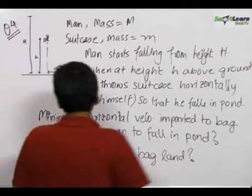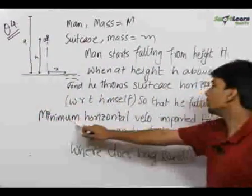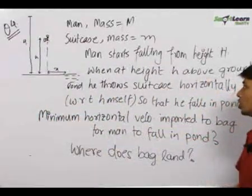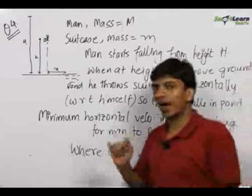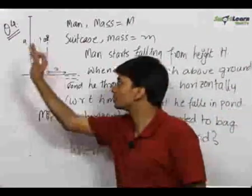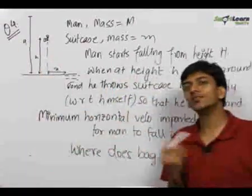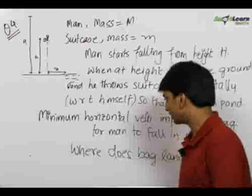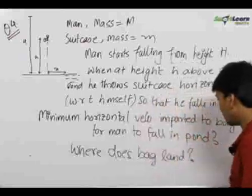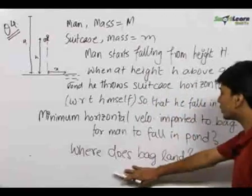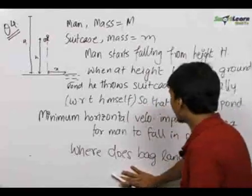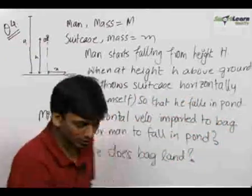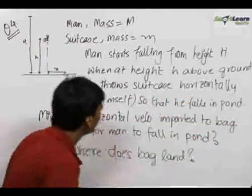The question is: with what minimum horizontal velocity should he throw the bag with respect to himself on the other side, so that he himself falls in the pond? The second part of the question is where does the bag land? Let us solve this question.